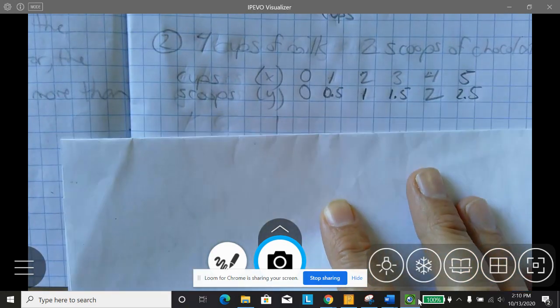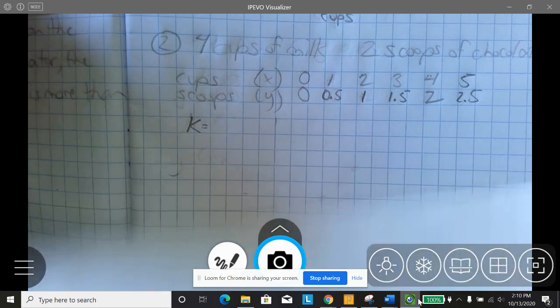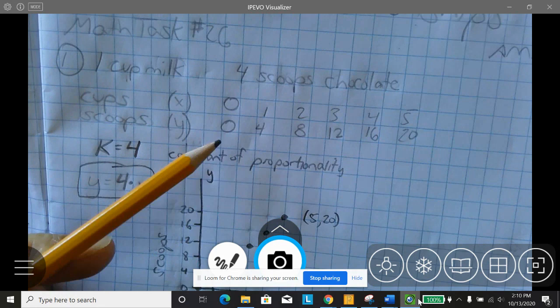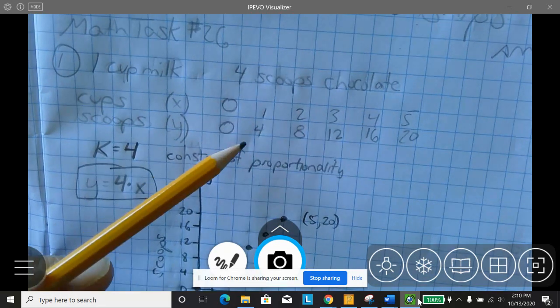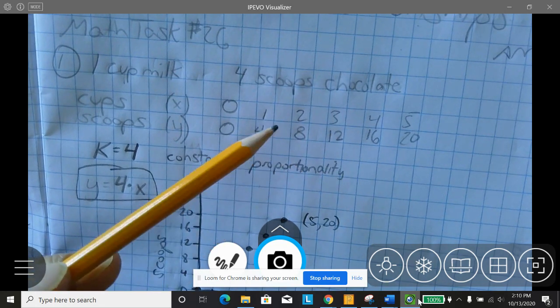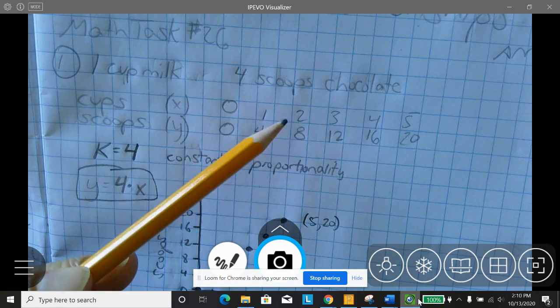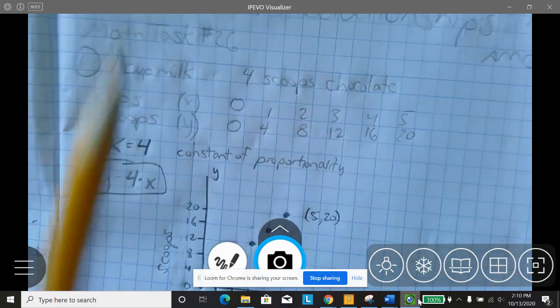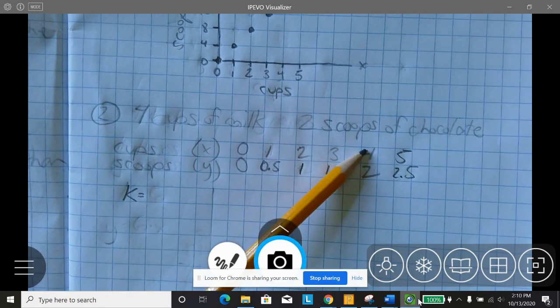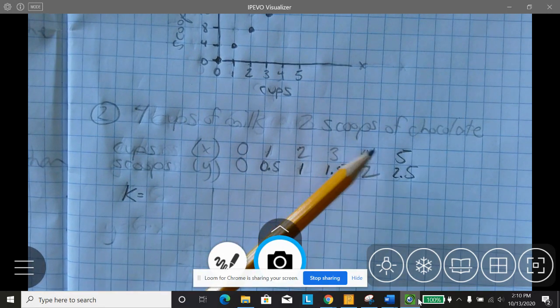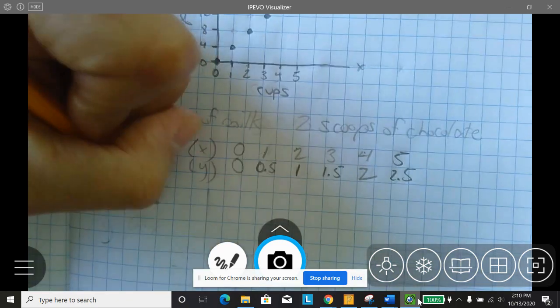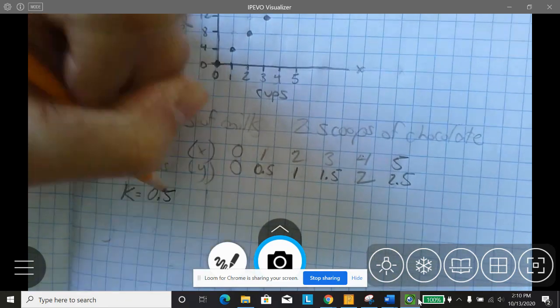Now, in this case, what is my k value? Well, my k value, just like up here, is what do I multiply by? One to get four. What do I multiply two by to get eight? What do I multiply three by to get 12? Or you could say four divided by one, eight divided by two, 12 divided by three. Well, if I do the same thing down here, two divided by four is a half. Or you could say half of four is two. So in this case, the k value is 0.5 or a half.